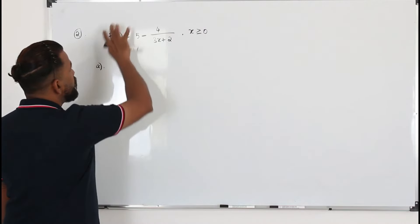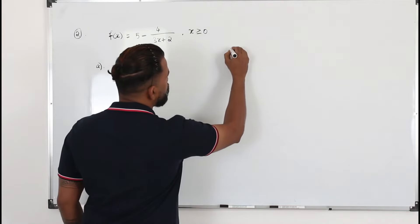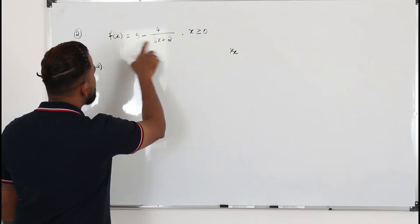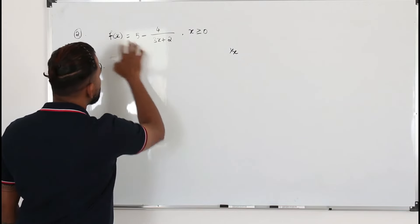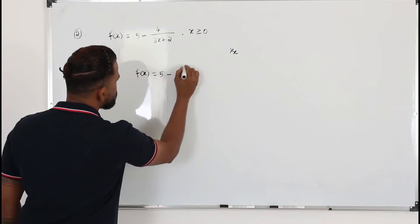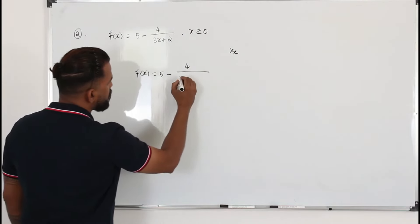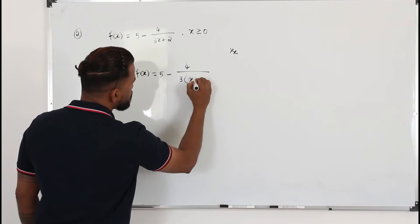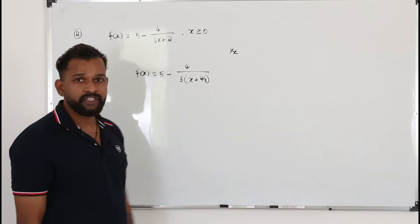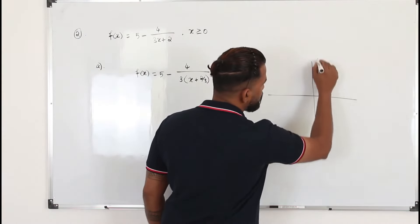Once you have this function, try to write it in terms of 1 over x. You have 3x here, so take the function as 5 minus 4 divided by — take 3 out as a common factor — so you get x plus 2 over 3. That's the first step. Now I'm going to sketch the graph, starting from 1 over x.